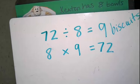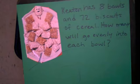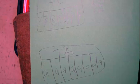Is that correct, Keaton? Let's check his work on the back — he gave us the answer back here. Let's see if I got it right. Very nice! Do you see that, guys? 72 total biscuits, nine in each of the eight bowls. That was a good one. Let's do another one.